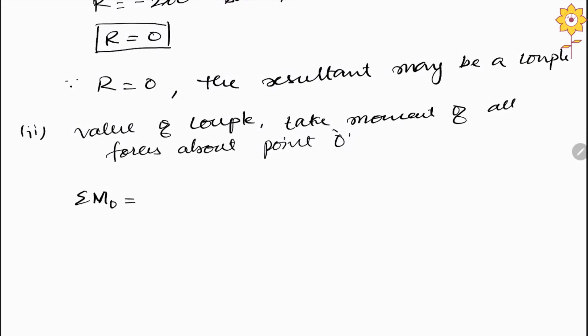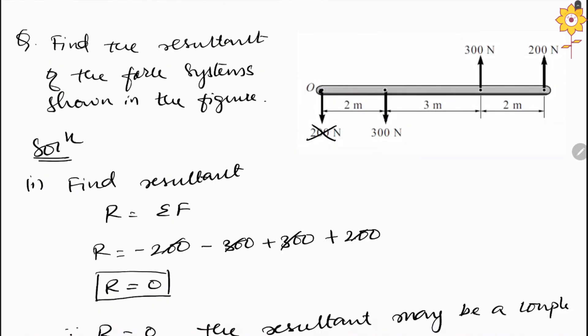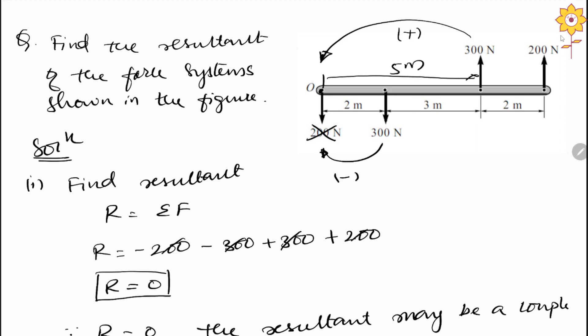The first force acting downward makes a clockwise direction about point O — taken as negative — with a distance of 2 meters. The second force of 300 N acting upward makes an anticlockwise (positive) direction with a distance of 5 meters. The third force acting upward also contributes positively, with a total distance of 7 meters.